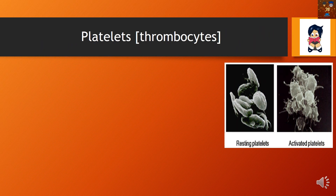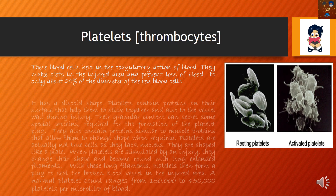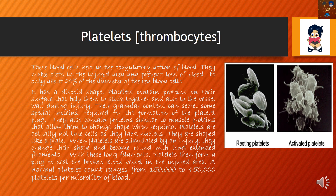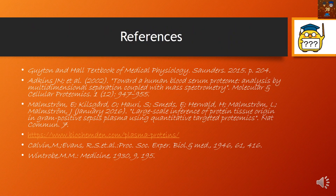Shown here is the resting platelet — when the platelet is not engaged in coagulation — and the activated platelet, when it is involved in coagulation. Platelets are very important for the coagulation process. Whenever there is shedding of blood from any part of the body, platelets accumulate there, form thread-like structures, and trap all the blood cells so they are not lost, thereby helping to maintain the blood volume of the body.